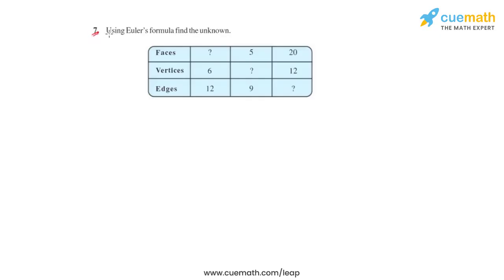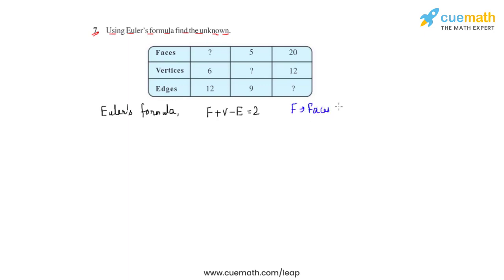In question number 7 of this third exercise, using Euler's formula, you will have to find the unknown values. As we see in this table, the unknown values are represented by question marks. For a polyhedron, Euler's formula is represented by the equation f plus v minus e is equal to 2, where f represents the number of faces, v represents the number of vertices, and e represents the number of edges in the polyhedron.